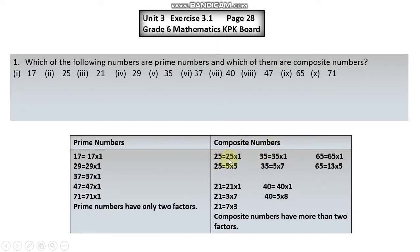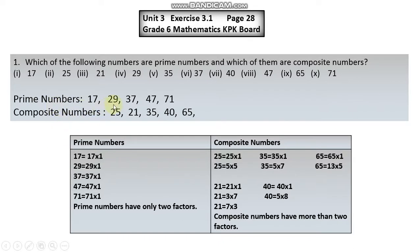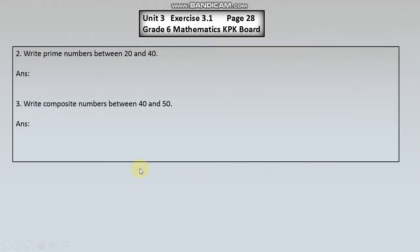Ab composite numbers: twenty five ka factor one bhi hai aur five bhi hai. Twenty five equals five times five. Is tarah thirty five aur sixty five ke bhi ek se zyada factors hain. Yeh composite numbers hain kyunki in ke factors do se zyada hain. Yeh prime hain kyunki in ke factors only two hain.